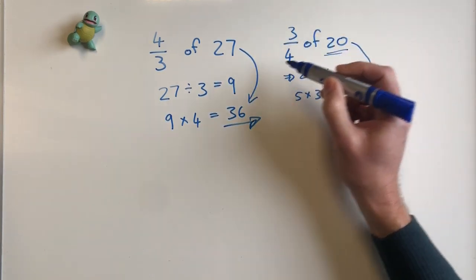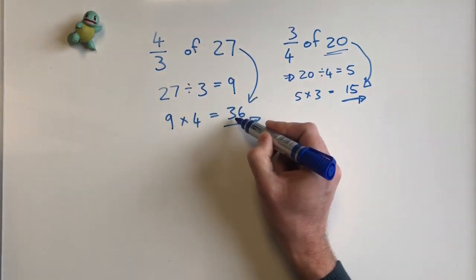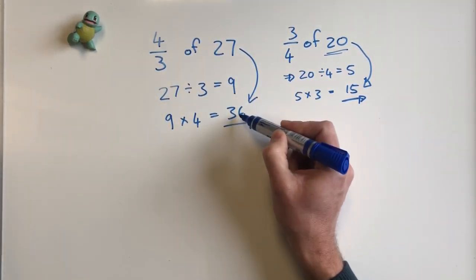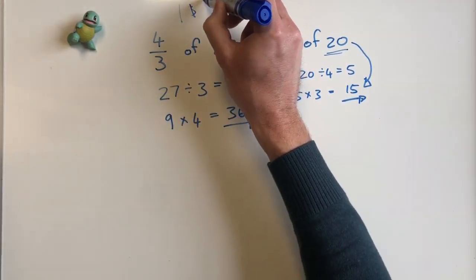Because obviously this is less than one, but this is more than one. So if I'm going to use this, it will become larger. So we had 27 and it became larger because this is actually one and a third.